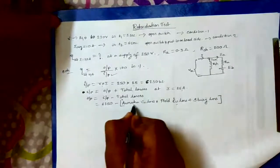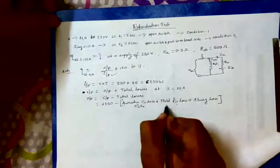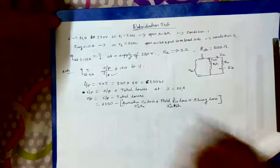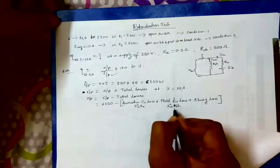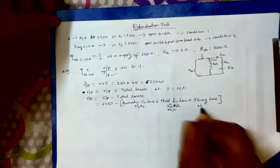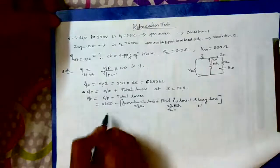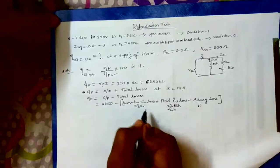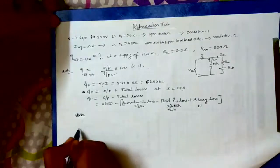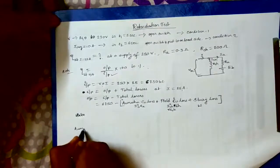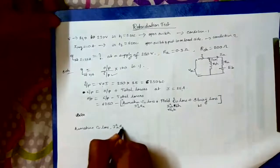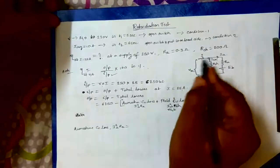First the formulas: armature copper loss is I squared A into RA, field copper loss is I squared SH into RSH or simply V into ISH. Both are fine. And stray loss I shall write as W. Let us try to calculate armature copper loss.